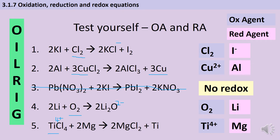For the reducing agents: in question one we've got the iodide ions in potassium iodide, which lose their electrons to the chlorine molecule and turn back into an iodine molecule. In question two we've got some aluminium atoms acting as a reducing agent, turning into aluminium 3+ ions in aluminium chloride. Question three is not redox. In question four we've got lithium atoms giving up electrons — they're being oxidised and therefore acting as a reducing agent, turning into lithium ions on the right hand side. Finally, magnesium gives up some electrons, acting as an electron donor — which is what a reducing agent is — and turns into magnesium 2+ ions.